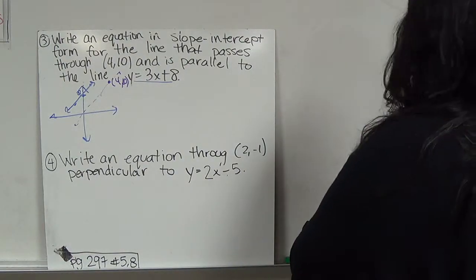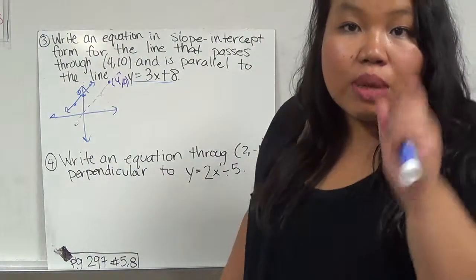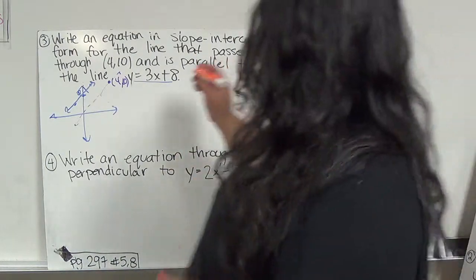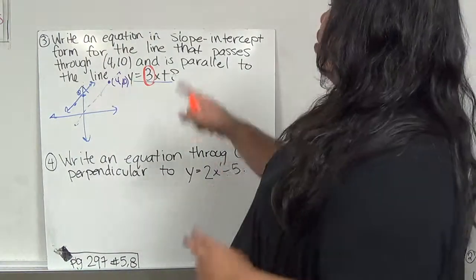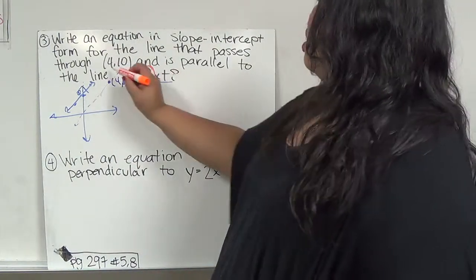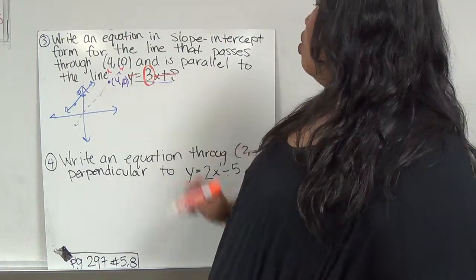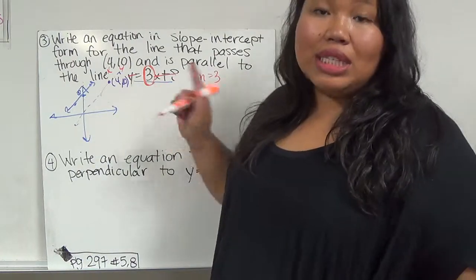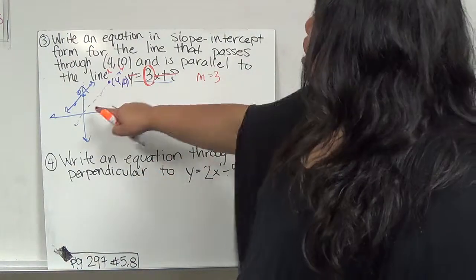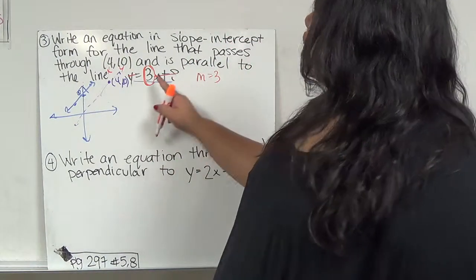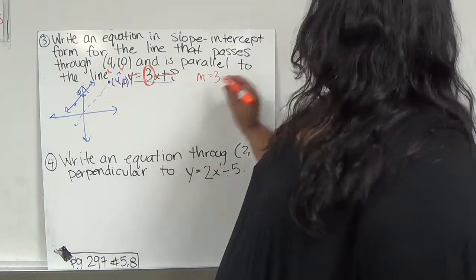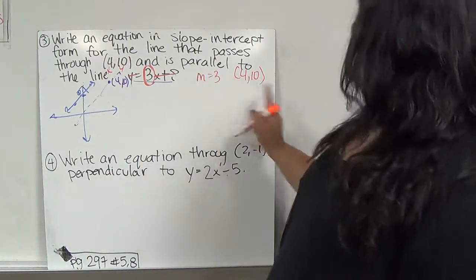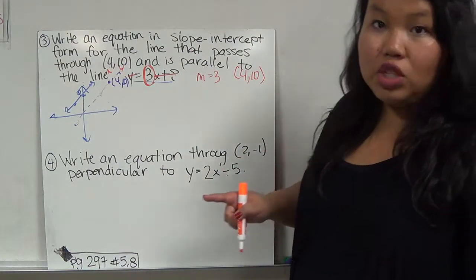So what I'm going to do is, I don't need anything from this equation except one thing, the slope. I don't need anything else. I need just this slope. Other than that, I need this point. This is my x and y. Everything else, I can just ignore. So if my m is 3, and I said the m is 3 because it's the same slope, it's parallel to this line, so the one thing I know is that it's going to have the same slope.